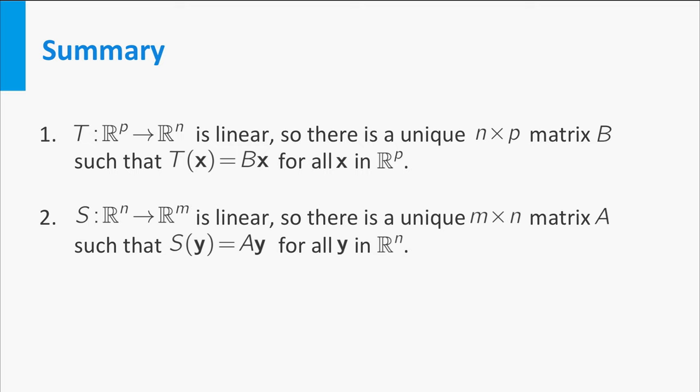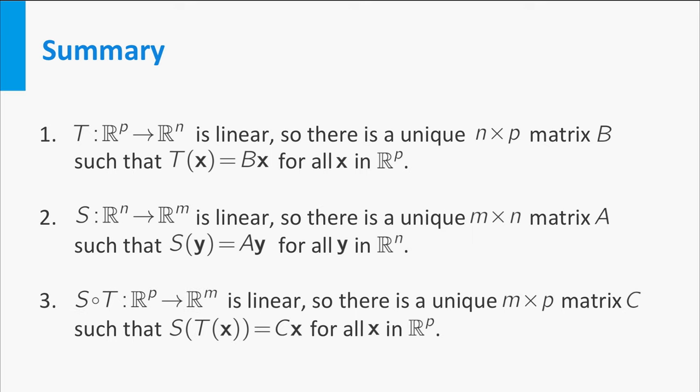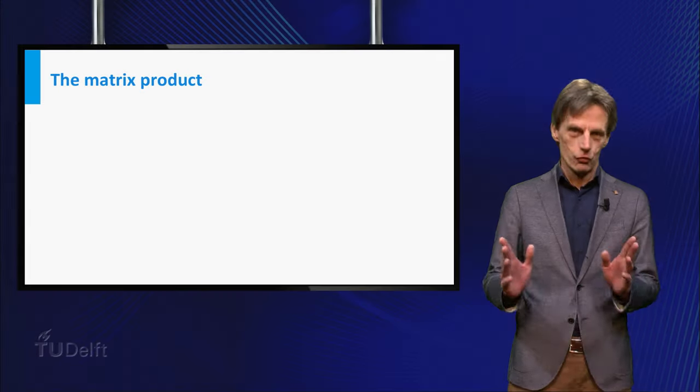This mapping is linear as well, so there must exist a unique m by p matrix C such that S of T of x is C times x for all vectors x in Rp. So, we have a matrix B which maps vectors from Rp to Rn and we have a matrix A which maps vectors from Rn to Rm, and the composition of these two mappings is represented by a third matrix C.